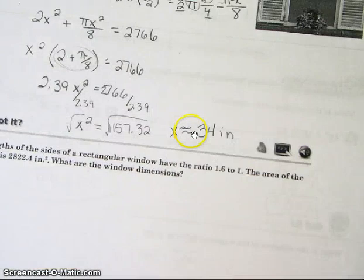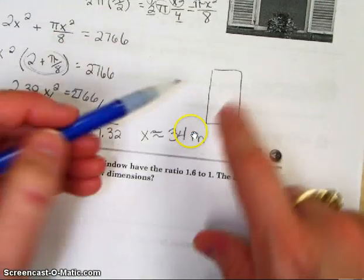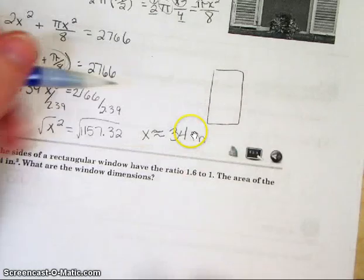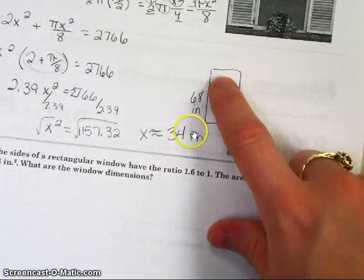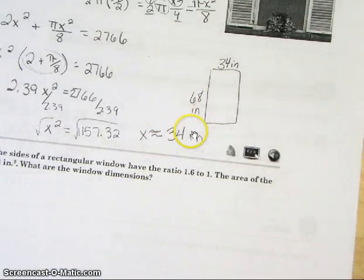So it says, what are the dimensions of the window? If you want to redraw the window, it might be helpful. For example, this area of the window right here is 2 times what we got, so 68 inches. This area up here is just regular of what we got because it was just x, 34. Let's do the Got It.